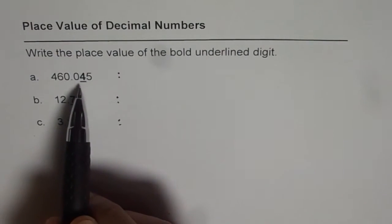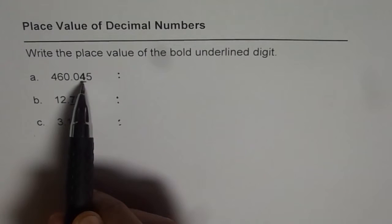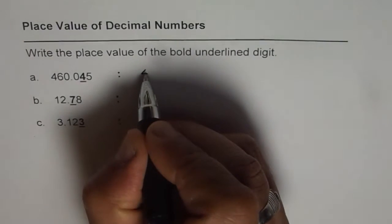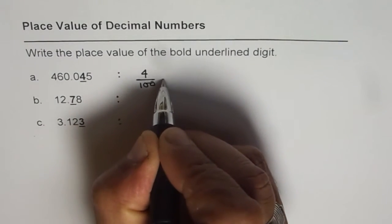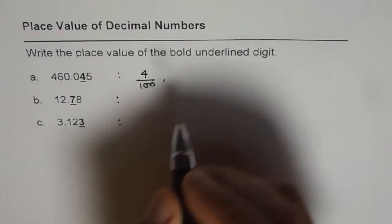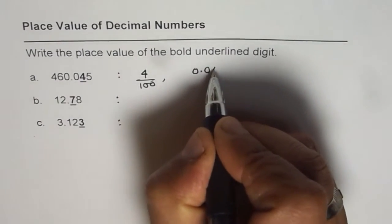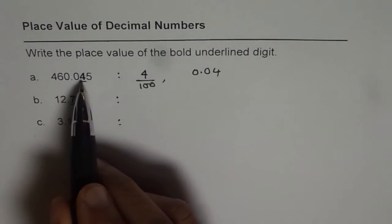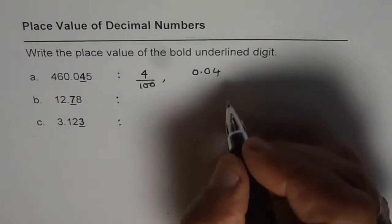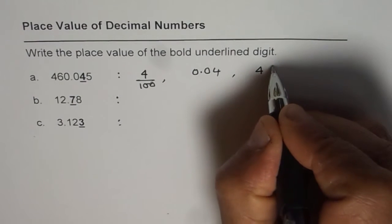First one, 4 is in which place? Tenths, hundredths and thousandths. So this is 4 hundredths. So you could write 4 over 100, that could be one way of writing. It could be written as 0.04. That also means the place value for the number is 4 hundredths. Or you could say 4 hundredths.